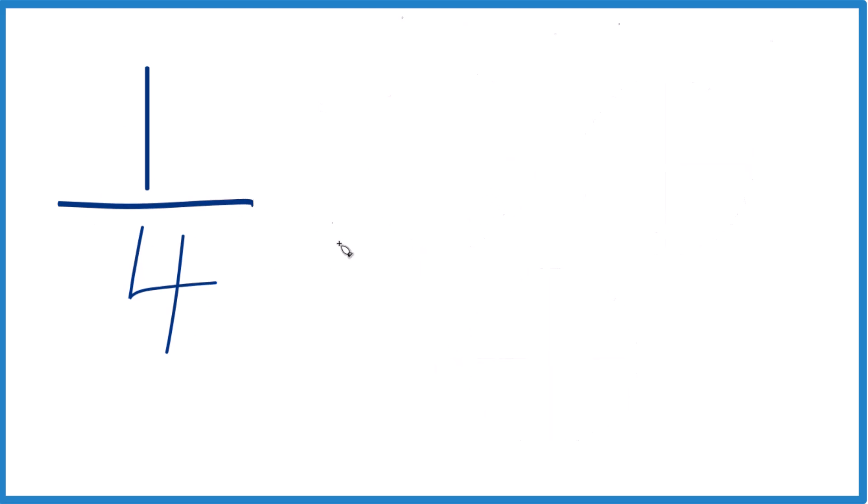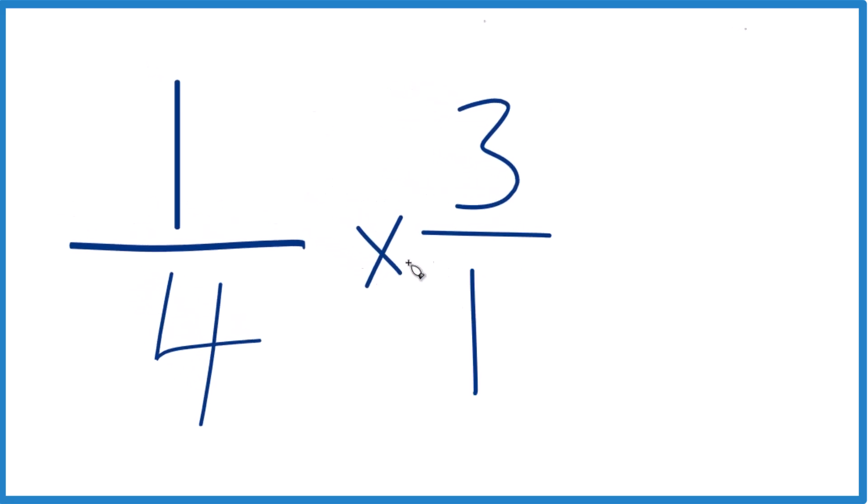So we could multiply one-fourth times three, and I like to call it three over one. Three divided by one, it's still three, but now everything lines up real nice.